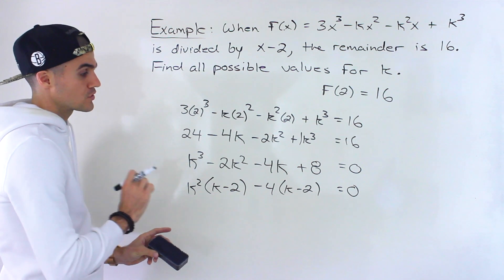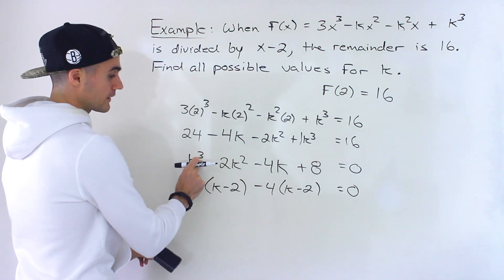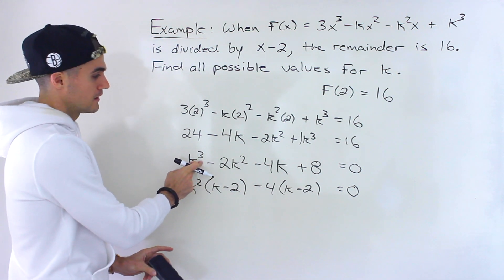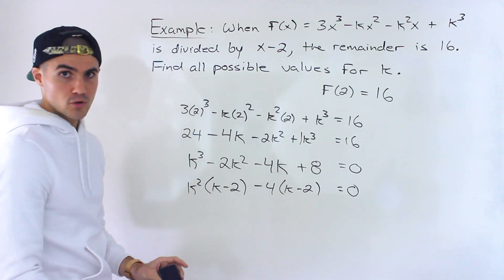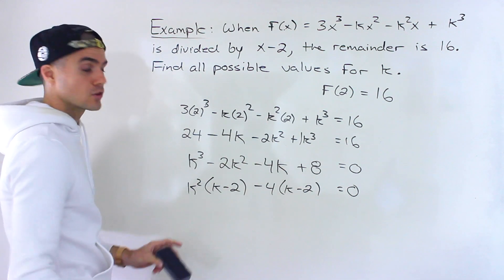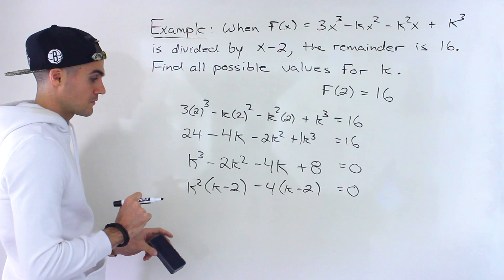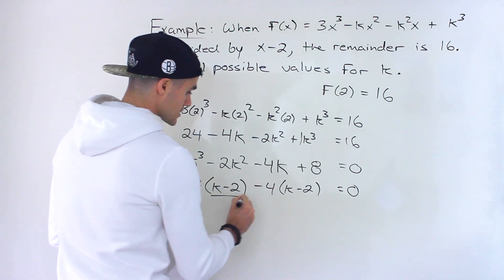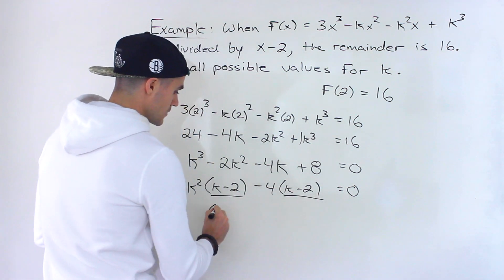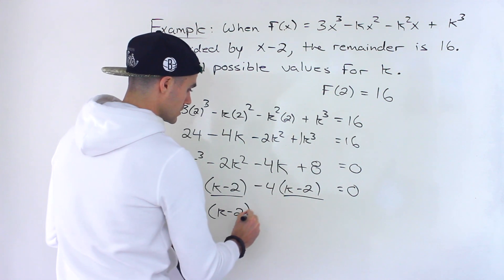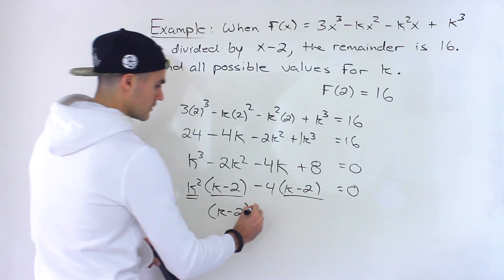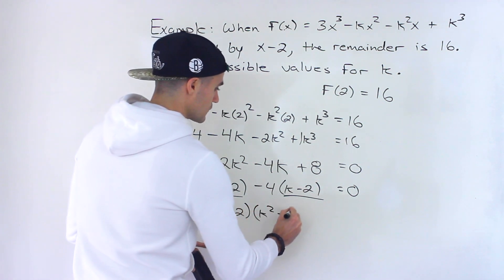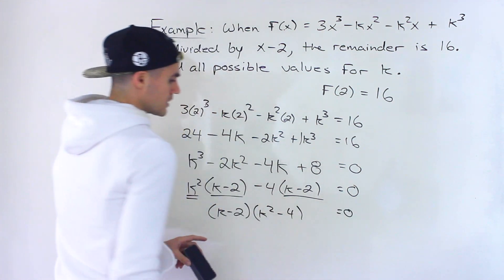That's always what I look for first with a cubic polynomial. If grouping doesn't work, then you have to do it the longer way with the factor theorem. But here it works because these brackets are the same. We can factor out (k - 2), leaving us with k² - 4 = 0.